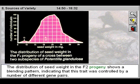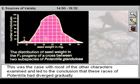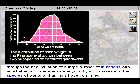The distribution of seed weight in the F2 progeny shows a blending pattern, indicating that this trait was controlled by a number of different gene pairs. This was the case with most of the other characters examined and led to the conclusion that these races of Potentilla had diverged gradually through the accumulation of a large number of mutations with small effects.